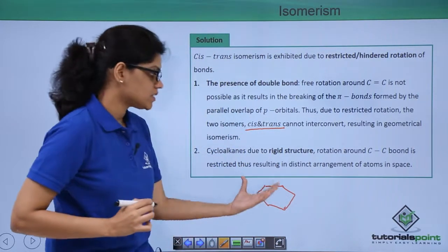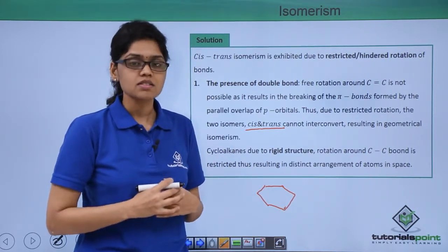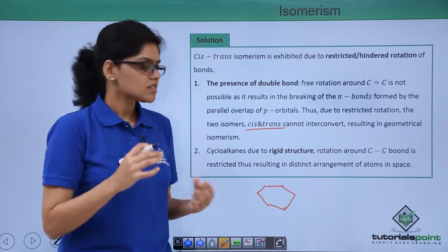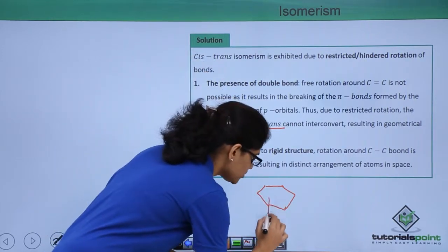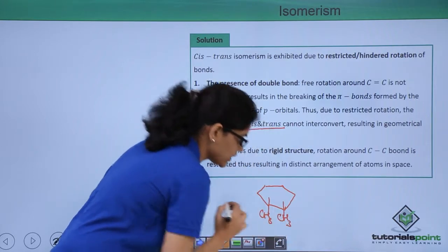As you can see that this is a very rigid structure and this particular system can also exhibit cis and trans. For example, let us consider cyclohexane where you have two methyl groups on the same phase of the cyclohexane. This will become an example of your cis isomer.